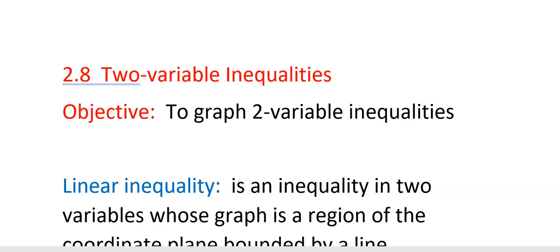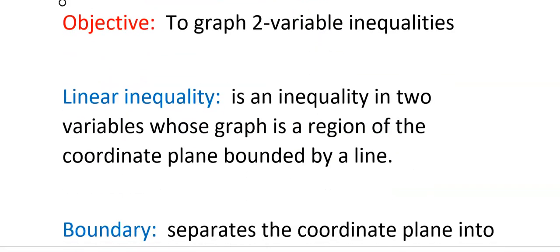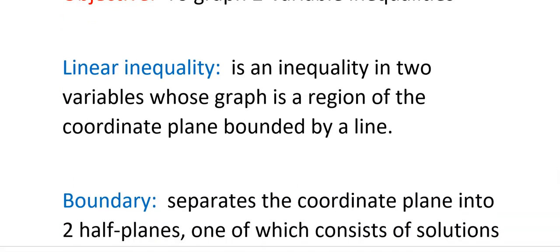Today we're looking at section 2.8, two variable inequalities. What we're going to do is graph some lines. They might be dotted, they might be solid, and we're going to shade one side or the other. The first ones we're going to do, you have done before. These are linear inequalities.